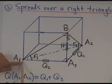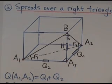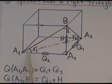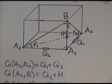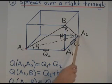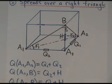So, first of all, the quadrants between A1 and A2 is by Pythagoras theorem Q1 plus Q2 because that's a right triangle. The quadrants between A1 and B is Q2 plus H. Q2 plus H, it's also Pythagoras theorem. The quadrants between A2 and B is Q1 plus H. Again, Pythagoras theorem.